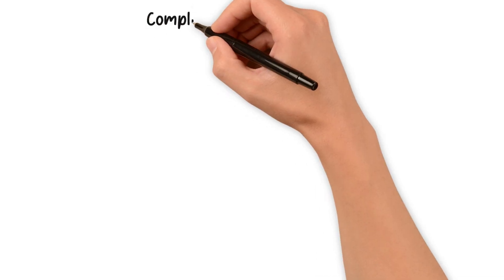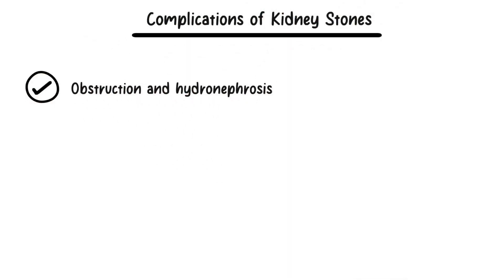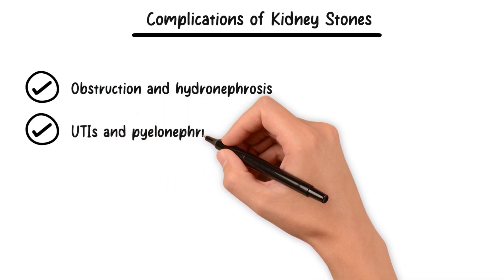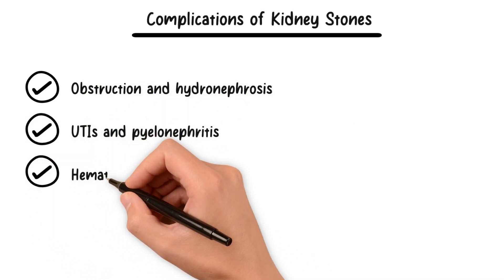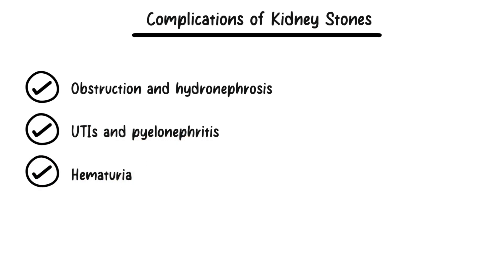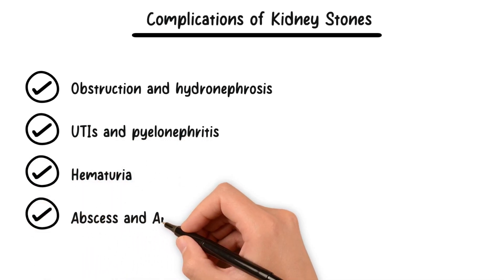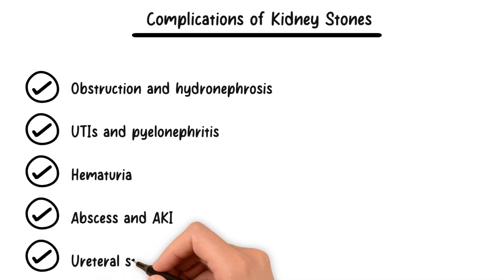Kidney stones can lead to various complications, including urinary tract obstruction, hydronephrosis, and urinary tract infections. They may also cause hematuria. In severe cases, kidney stones can result in abscess formation, kidney function impairment, and long-term issues like ureteral strictures, which narrow the ureter and affect urine flow.